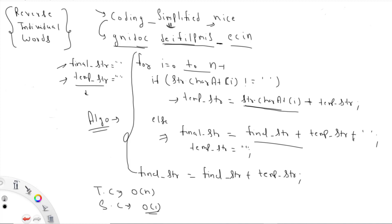Hey everyone, welcome to Coding Simplified. We have a new string problem: we are given a string and we need to reverse the individual words. For example, if we have 'coding simplified nice', it should be converted so that each word is reversed individually — the words stay in the same position, but each word itself is reversed.